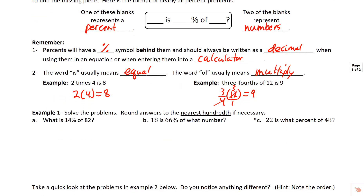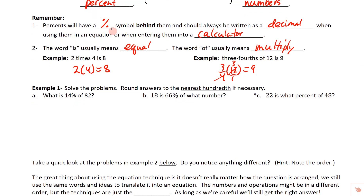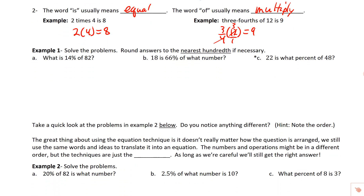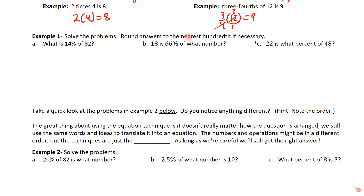So let's keep those things in mind — the percent is always going to have a percent symbol and we put it in decimal form. The word 'of' means multiply, and the word 'is' usually means equal. Let's solve these using equations, and remember we're going to round our answers to the nearest hundredth if we need to — sometimes we will, sometimes we won't.